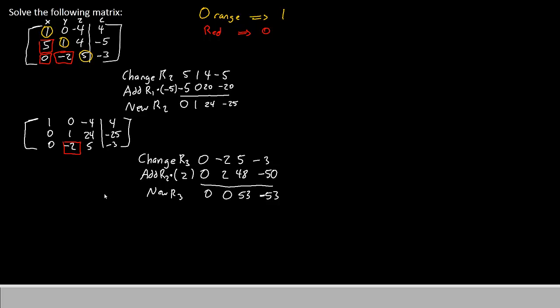So let's write our matrix one more time. We will have 1, 0, negative 4, 4. Because the top row did not change. The second row is now 0, 1, 24, negative 25. It didn't change in this step. And our third row is 0, 0, 53, negative 53. So now all of our targets in the bottom left-hand corner are all 0 like they're supposed to be. And most of our numbers along the diagonal are 1. There's only one thing left to do now.